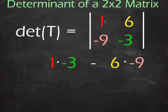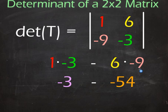That's going to be 1 lot of -3 is -3, six -9s is -54. So it's -3 take away -54. But when you take away a negative number, you're actually making the number more positive. So it's actually -3 plus 54.